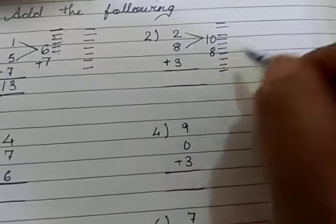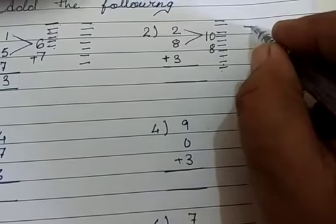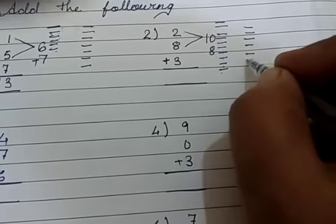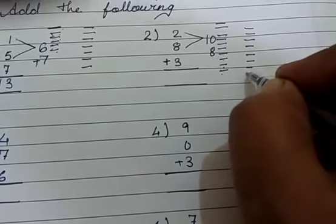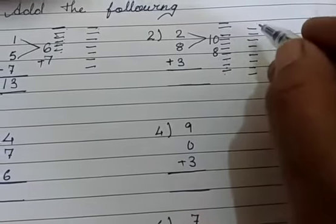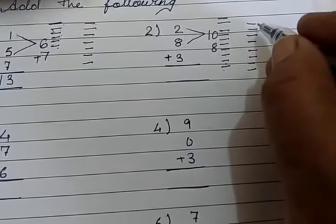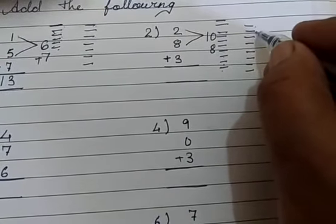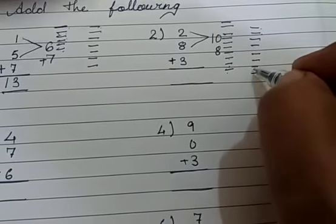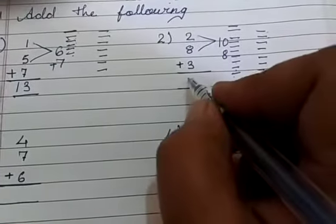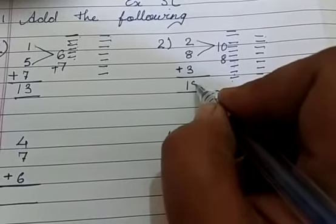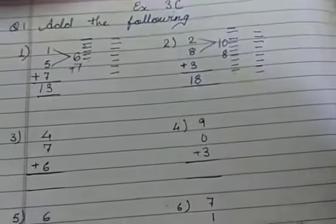Now we are adding 8 to 10. So I am drawing 8 strokes here. Till here we already counted 10, so the next number will be 11: 11, 12, 13, 14, 15, 16, 17, 18. So 2 plus 8 plus 3 is 18.